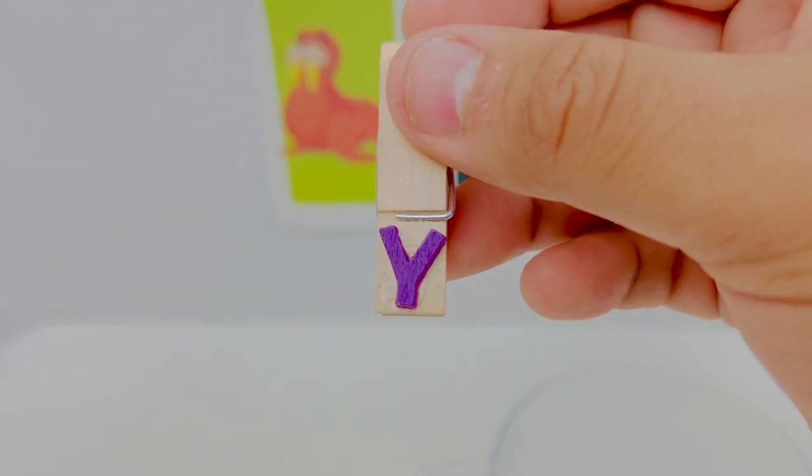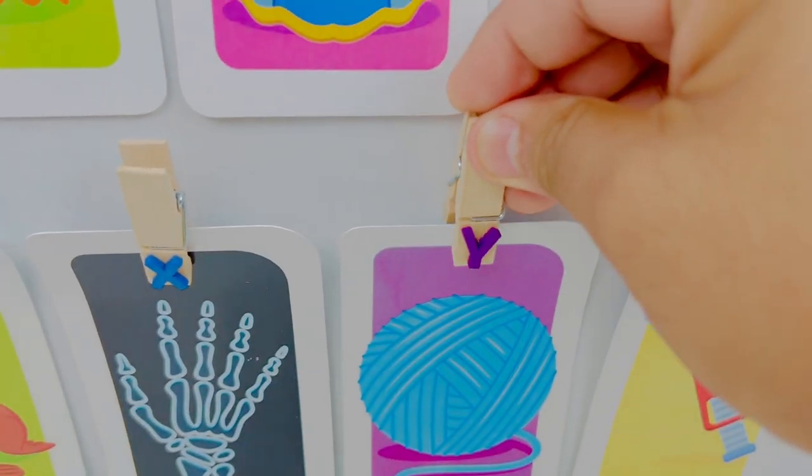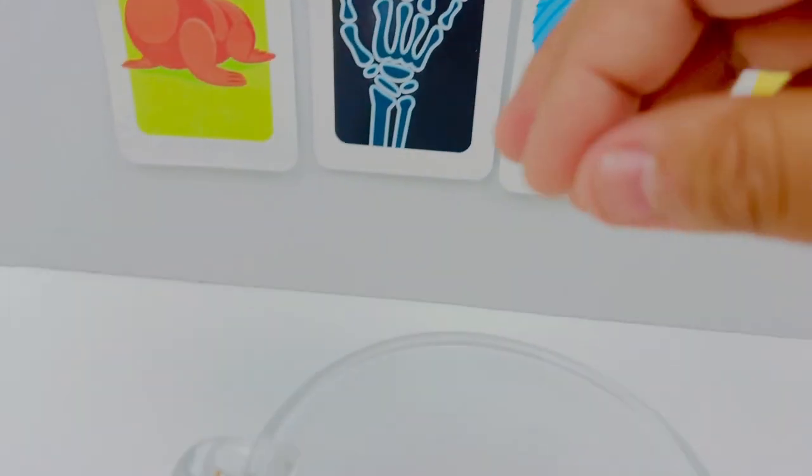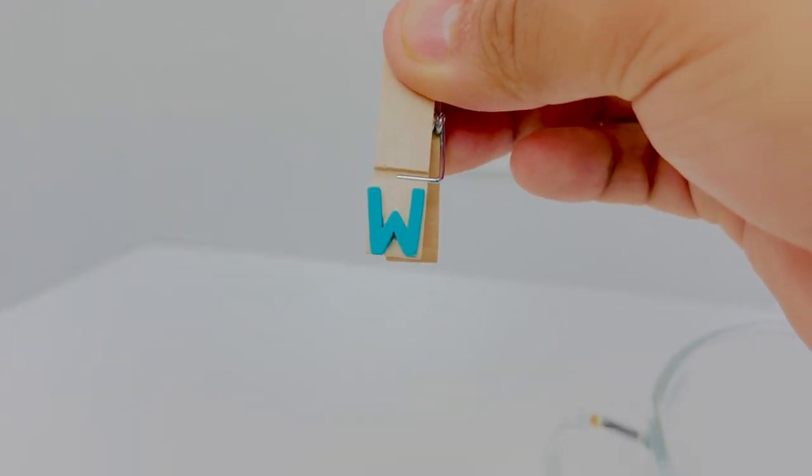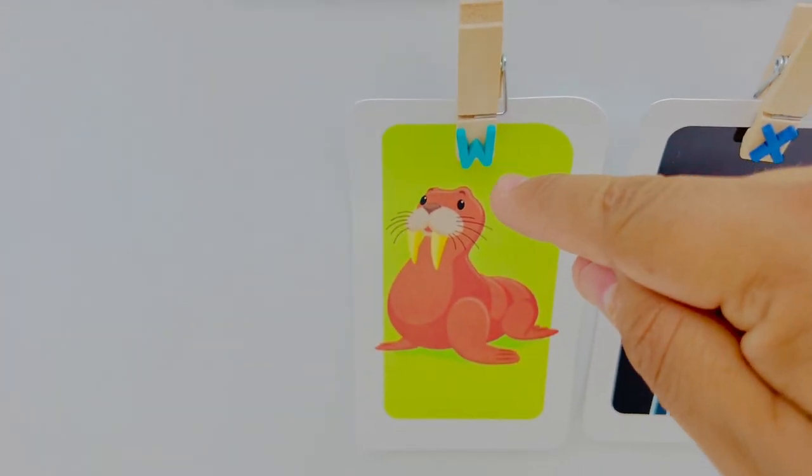This is letter Y. Letter Y is for yarn. Y yarn. And the last letter is letter W. W is for walrus. W walrus.